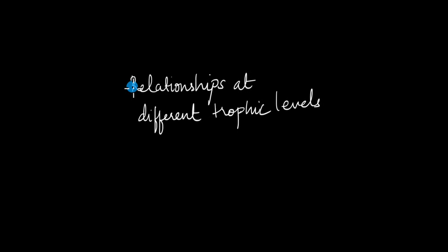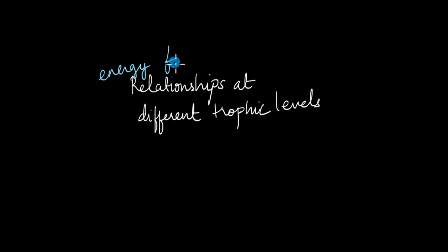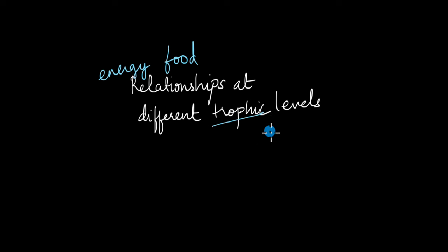What are the different kinds of relationships that exist at different levels? Those relationships can be of energy, food, and other things. We know that organisms depend on other organisms for food and energy, and the level that each organism occupies in that ecosystem is known as the trophic level.